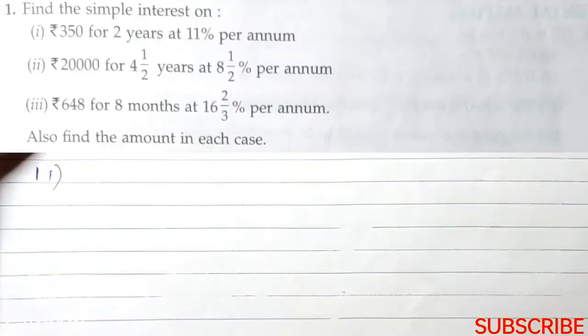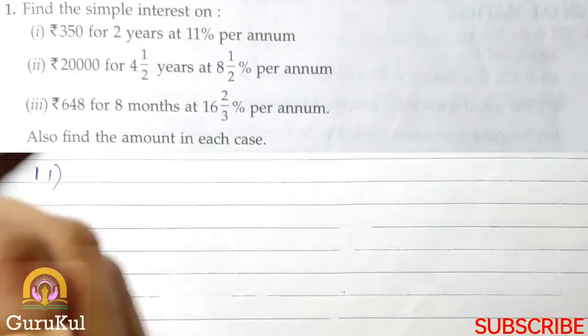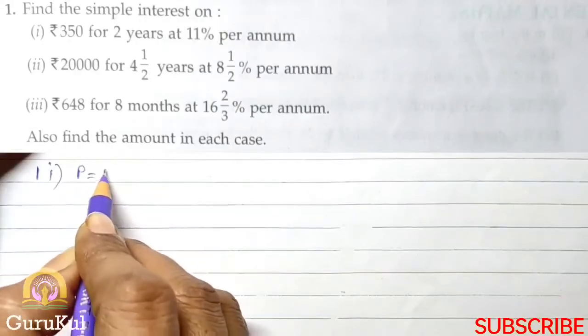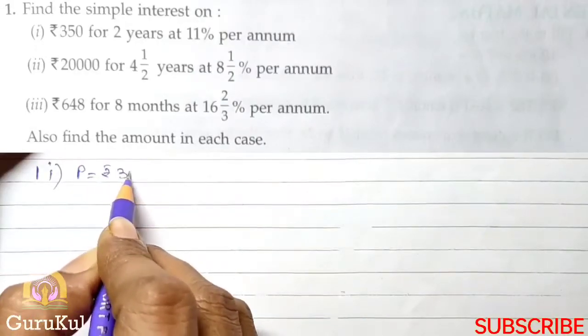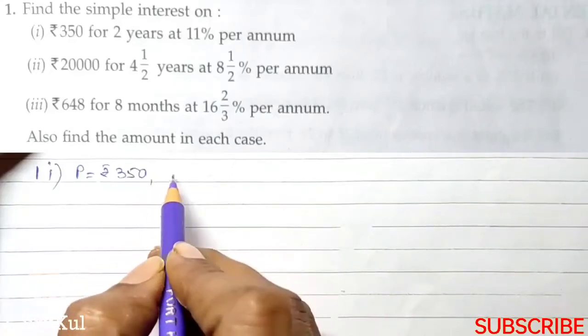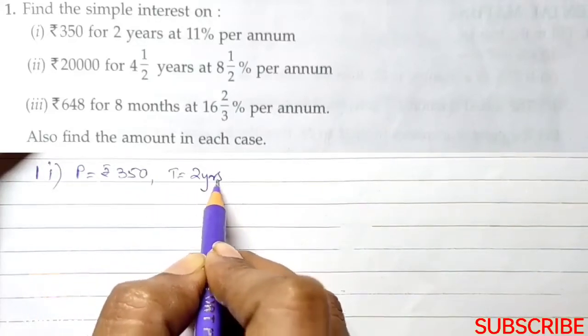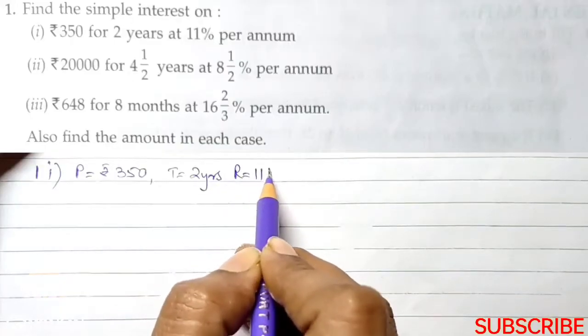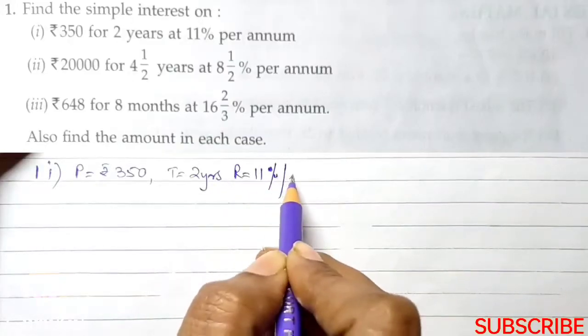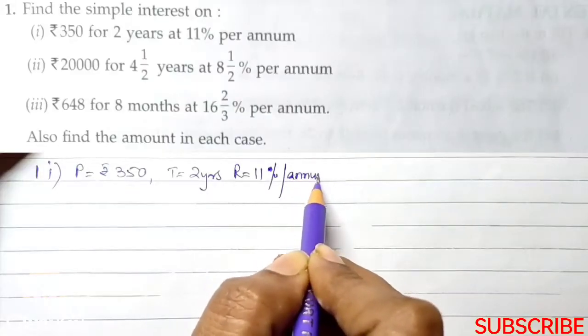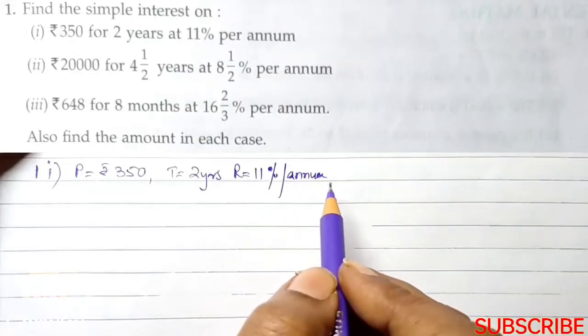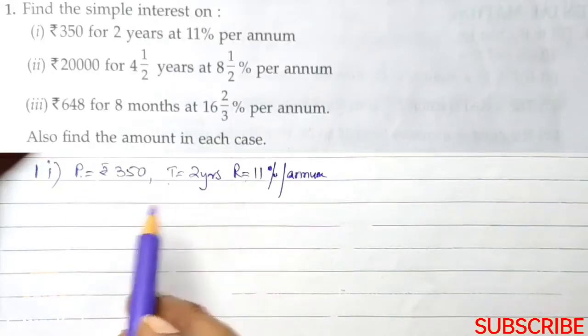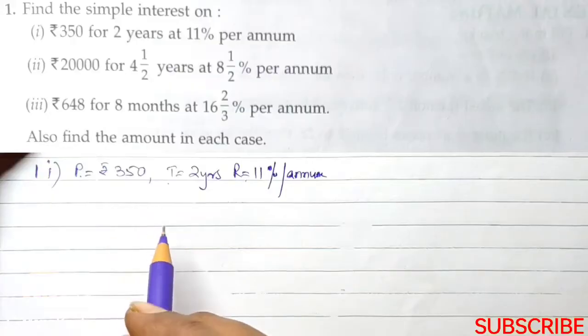Question number 1, the first part. We have to find the simple interest on principle is rupees 350, time is 2 years and rate is 11% per annum. Annum is year. So principle, time and rate is mentioned and we have to find simple interest.